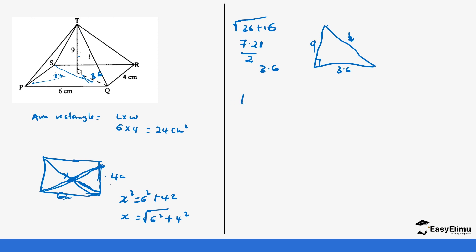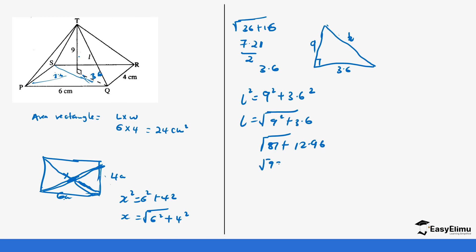So l² = 9² + 3.6², which means l = √(9² + 3.6²). Now 9² = 81 and 3.6² = 12.96. Adding these: 81 + 12.96 = 93.96. So l = √93.96 ≈ 9.7 cm. We'll use 9.6 as our slant height going forward.